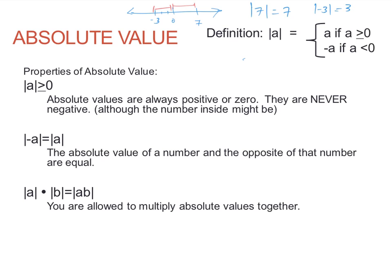A couple of properties of absolute values. First, absolute values are always positive or zero — they're greater than or equal to zero and can never be negative, although the number inside might be. Second, the absolute value of a number equals the absolute value of the opposite of that number: |7| = |-7|. Lastly, you can multiply absolute values together: |a| × |b| = |ab|. You cannot add them, but you can multiply them.